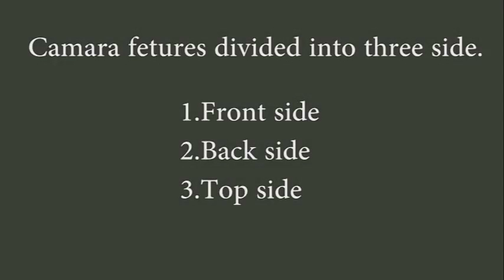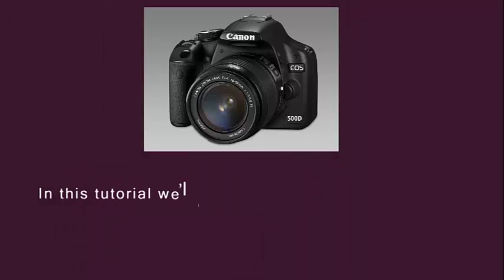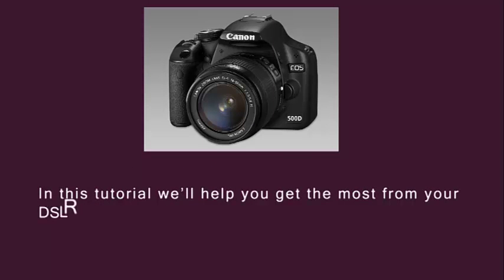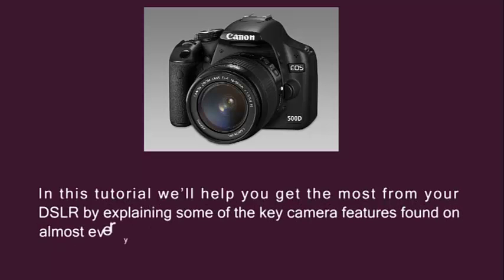Camera features are divided into 3 sides: 1. Front side, 2. Back side, and 3. Top side. In this tutorial we will help you get the most from your DSLR by explaining some of the key camera features found on almost every camera body.